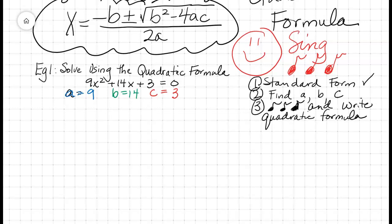Okay, are you all ready? Here we go. X equals negative B, plus or minus radical B squared minus 4AC, all over 2A.